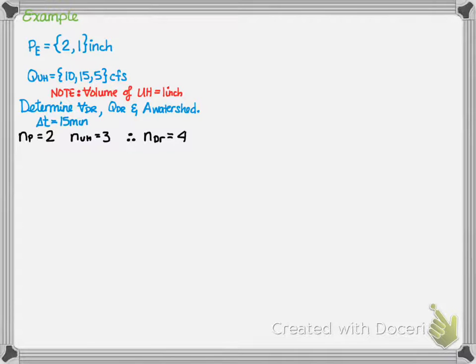First, we're going to calculate the number of ordinance of each that we have. The excess precipitation had two values. The unit hydrograph had three. So two plus three minus one will tell us that the direct runoff hydrograph will be four. The volume of the direct runoff hydrograph is equal to the volume of the excess precipitation. This can simply be done by adding the values of the excess precipitation. Two plus one gives us three inches. Note, in this example and in all examples including convolution, our excess precipitation is actually a precipitation depth, not an intensity.